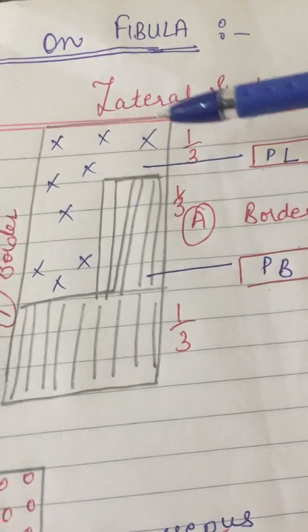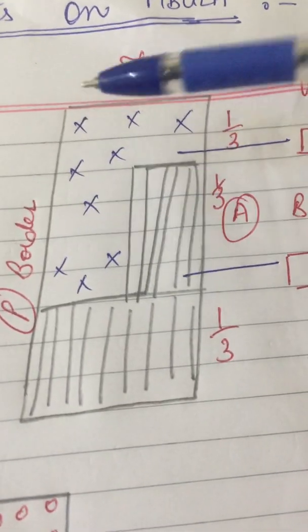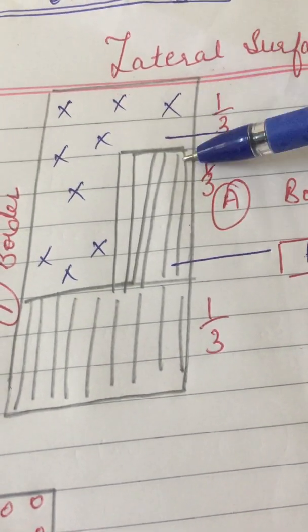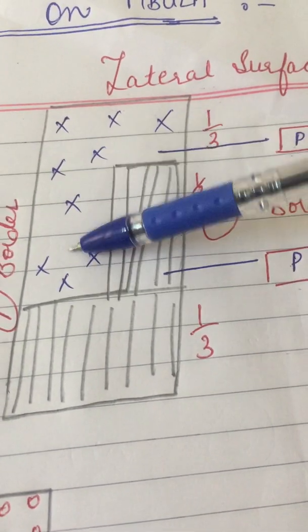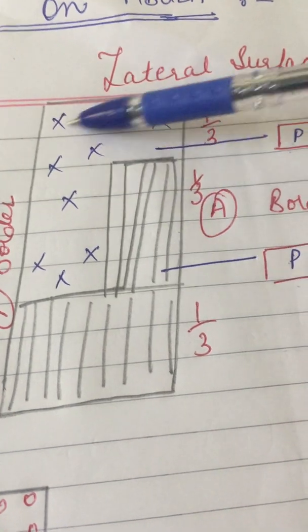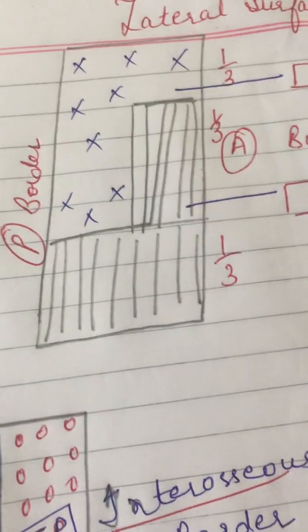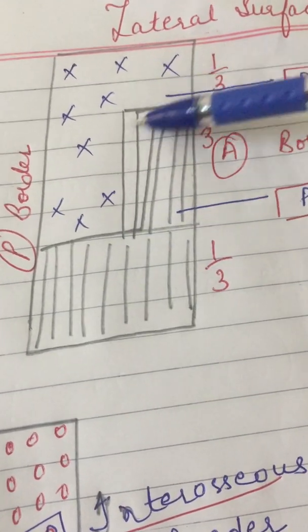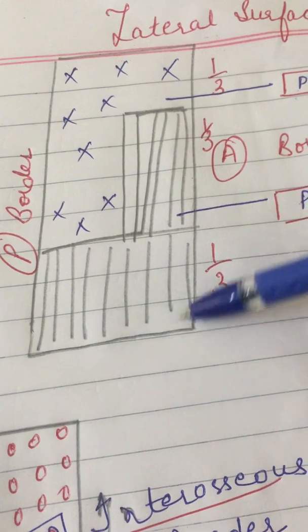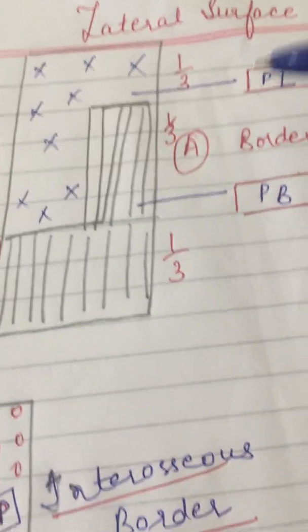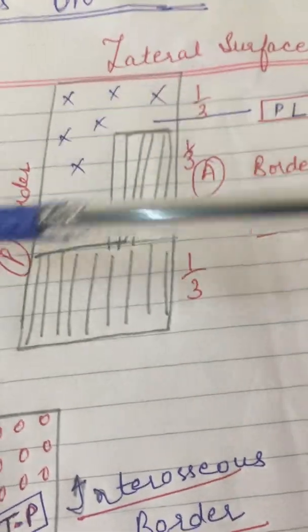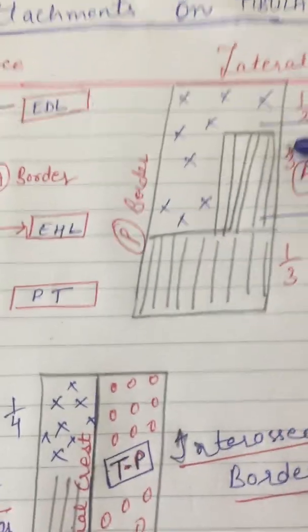Peroneus longus arises from the lateral surface, which is between the anterior border and the posterior border. From the upper one-third and the posterior part of the middle one-third arises peroneus longus. From the middle one-third and the lower one-third arises peroneus brevis. So these are the muscles on the medial and lateral surfaces.